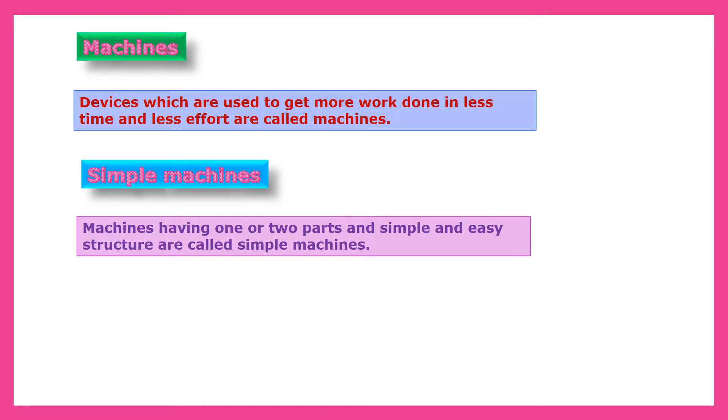Let us see the definitions of machines. Devices which are used to get more work done in less time and less effort are called machines. There are two types of machines: simple machine and complex machines. Machines having one or two parts and simple and easy structure are called simple machines.